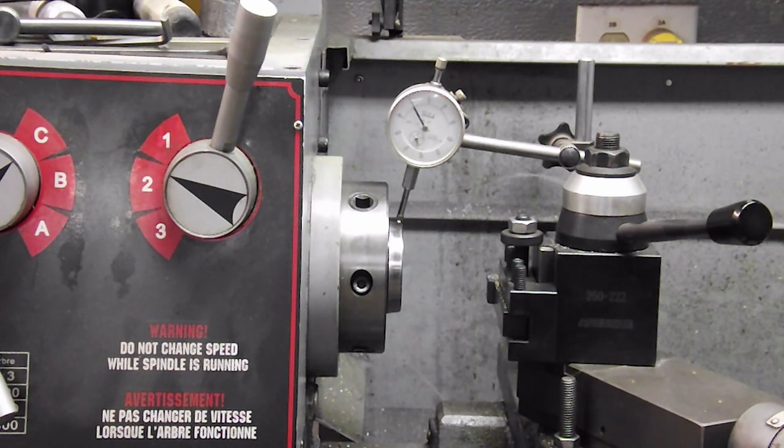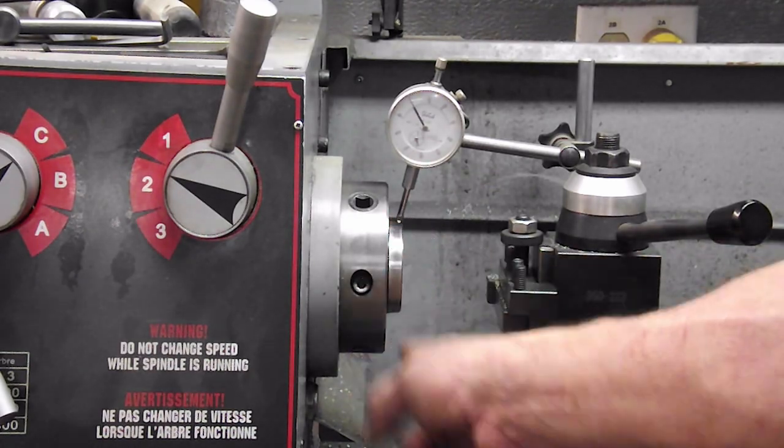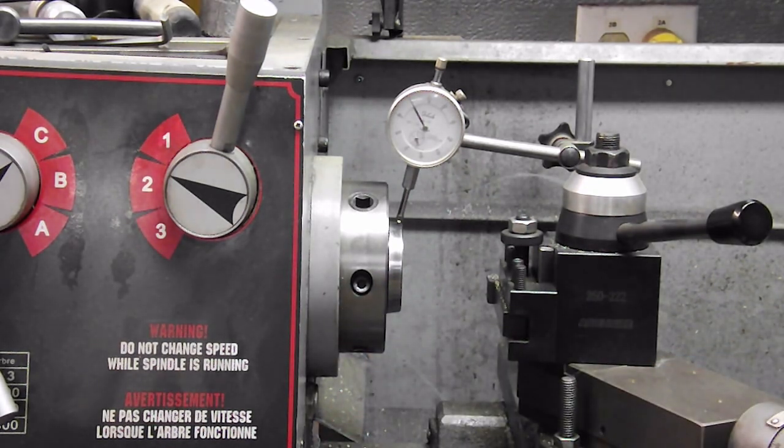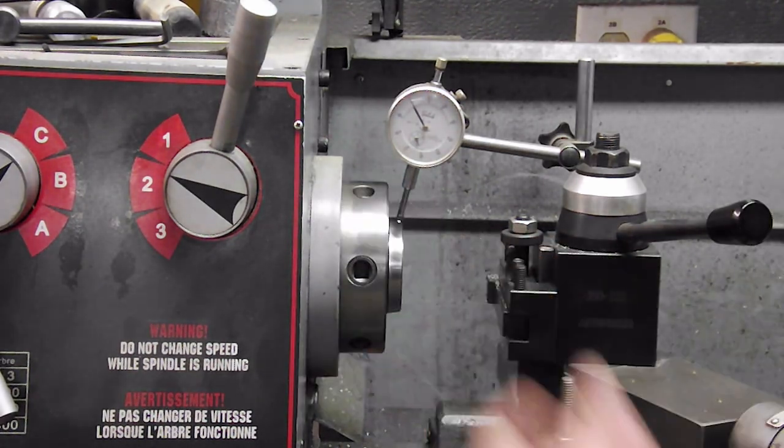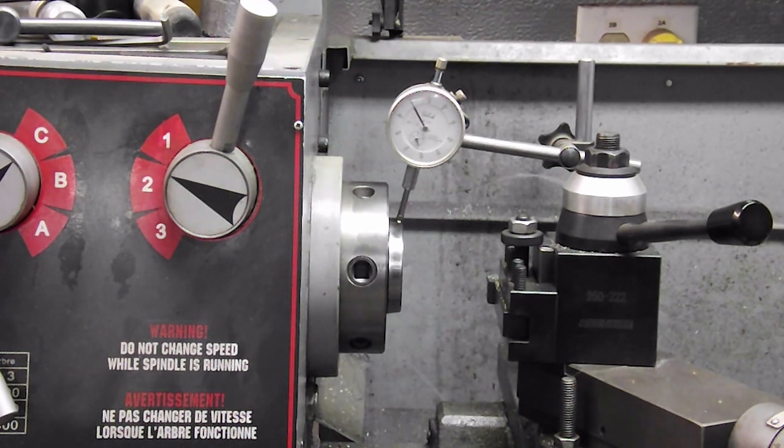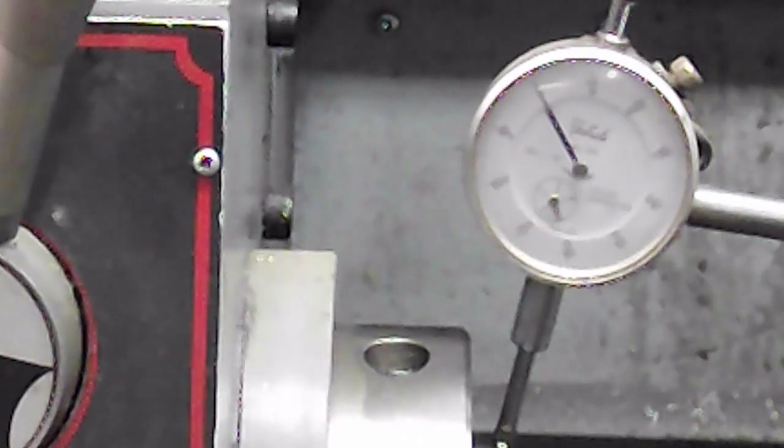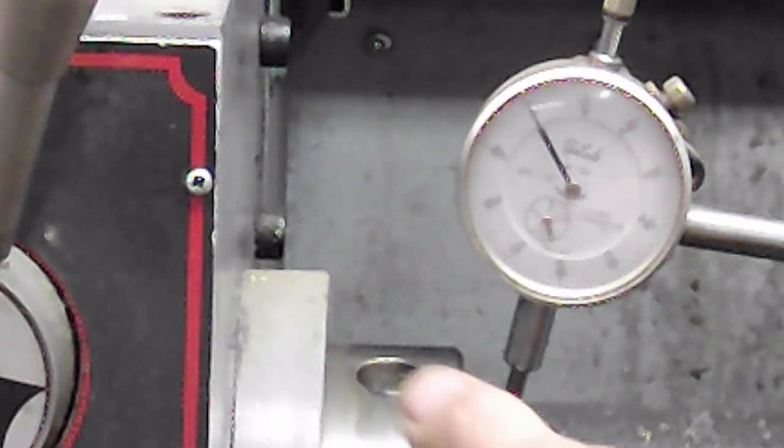In their setup instructions they want you to check the runout of this taper and the face and they want it within, I wrote it down, they gave it to me in metric, they want 1.6 ten thousandths. I'm actually going to zoom in on this for you. I've spun this and it's rock solid on zero.